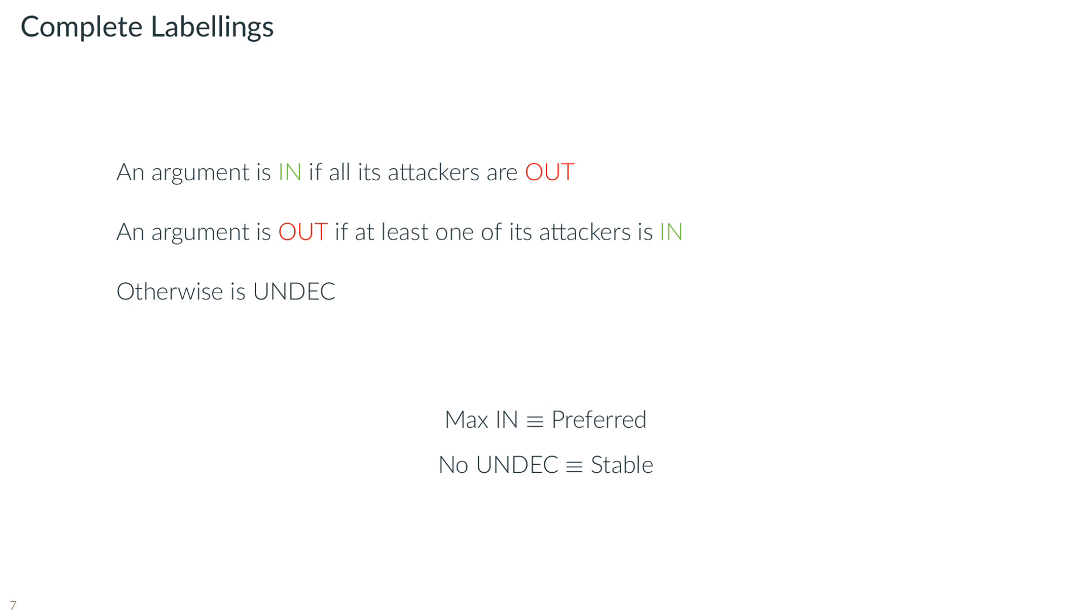A labelling is complete if the following conditions hold. An argument is in if and only if all its attackers are out. An argument is out if at least one of its attackers is in, otherwise the argument is undecided.